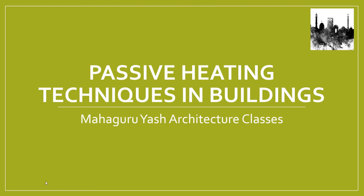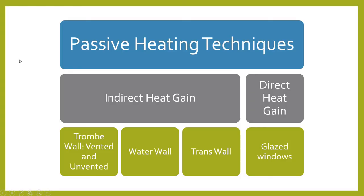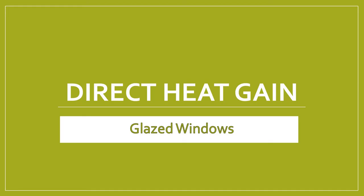Passive heating techniques are basically categorized in two ways: direct heat gain and indirect heat gain. For direct heat gain we have glazed windows, and for indirect heat gain we have the Trombe wall, which is further divided into two types — vented and unvented. We will also talk about water walls and the transe wall.